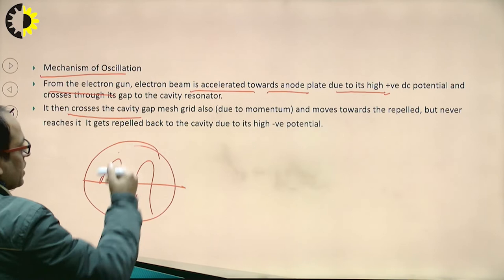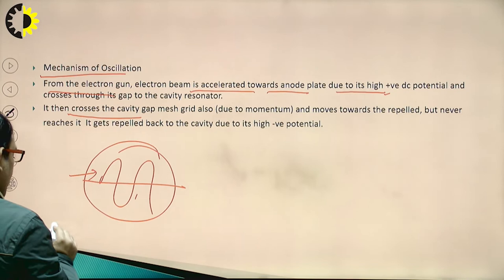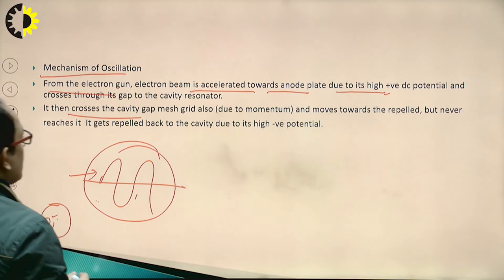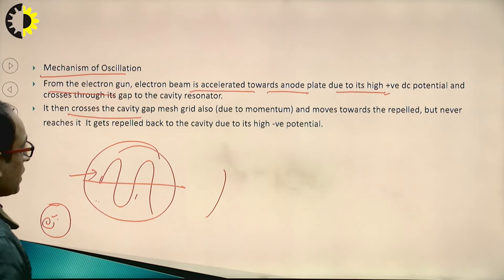The interaction between the electron and this RF wave results in the acceleration of the electron. At the end there is a repeller cavity. We will first look at the diagram and then come to the theory part.